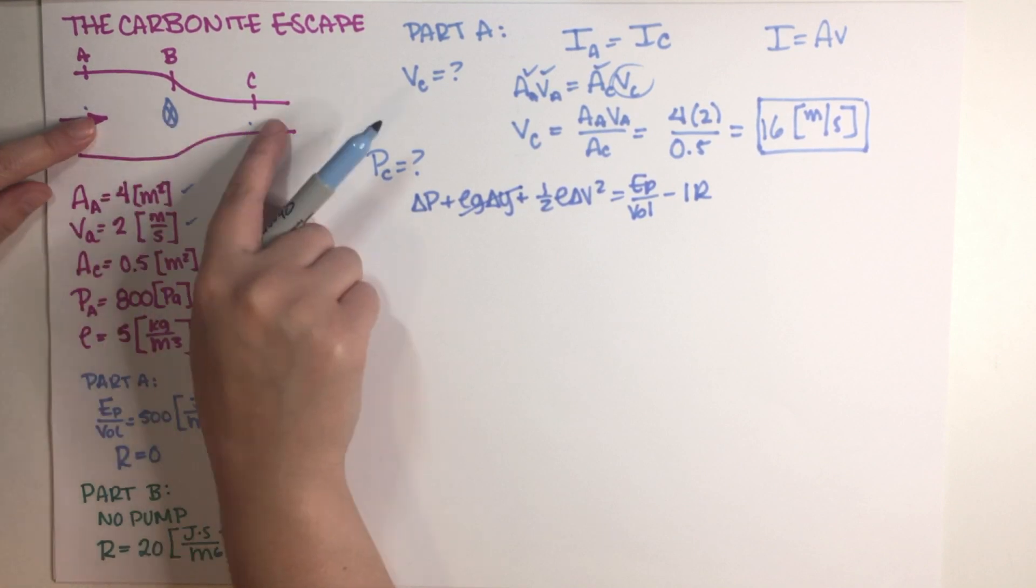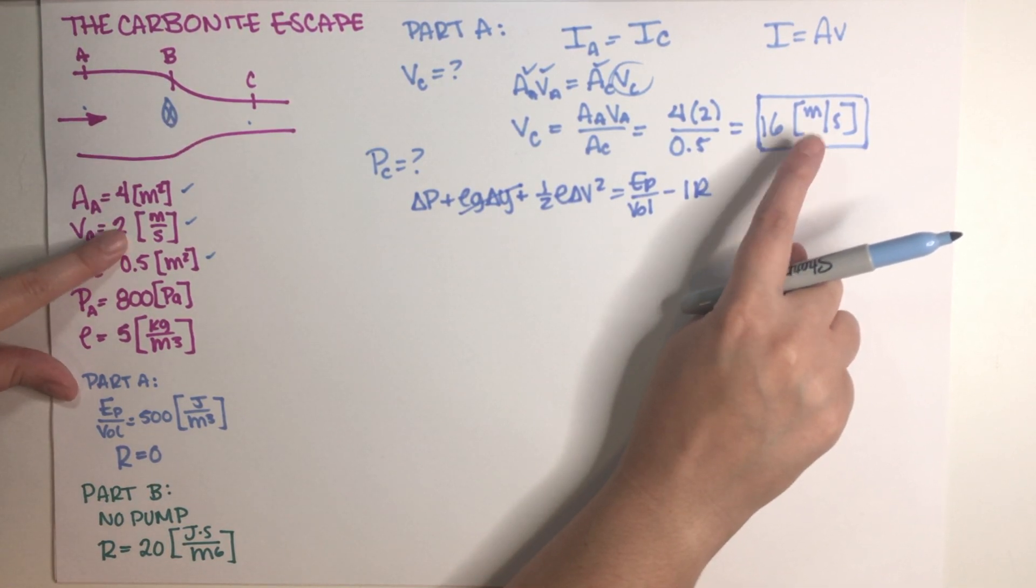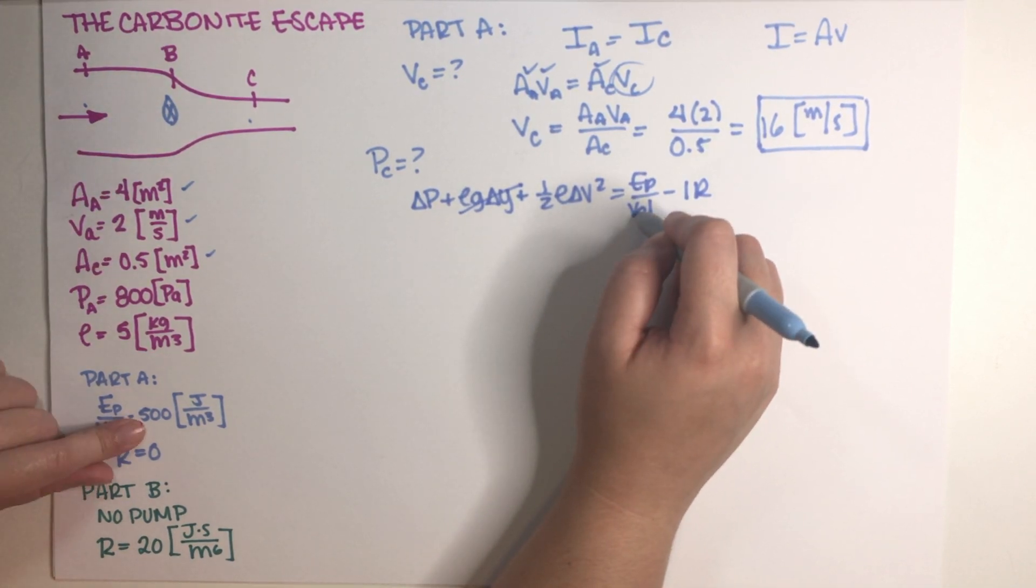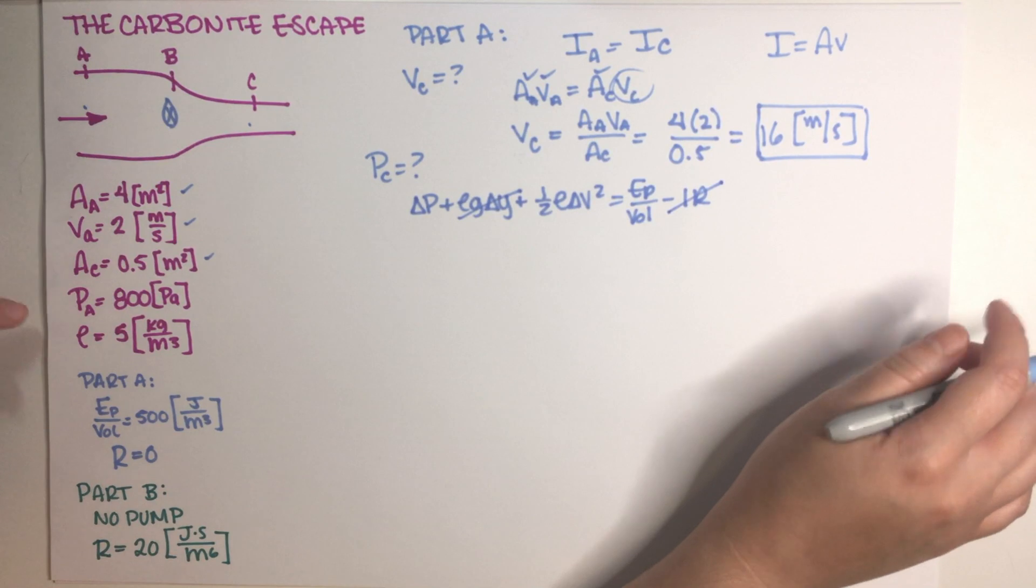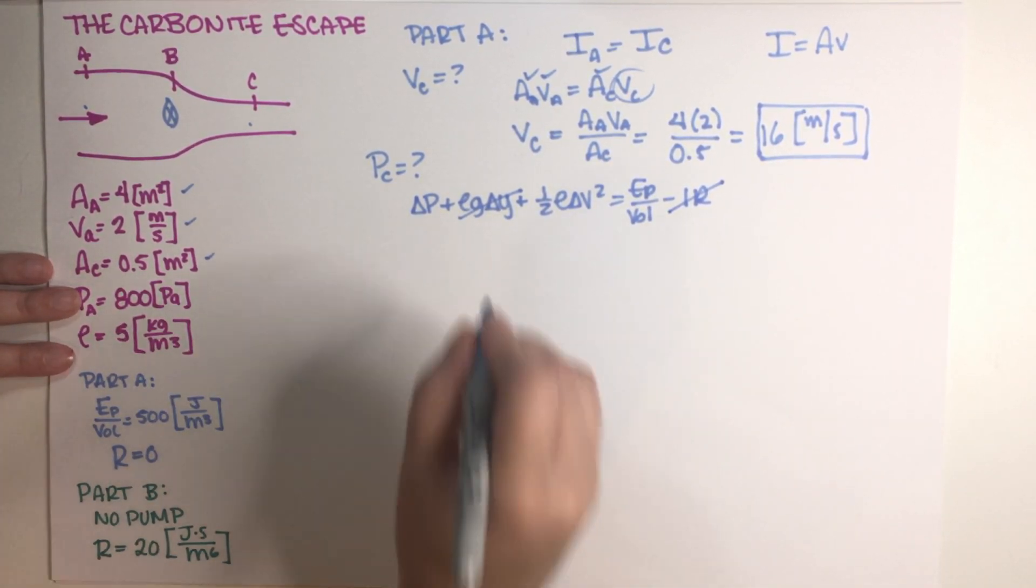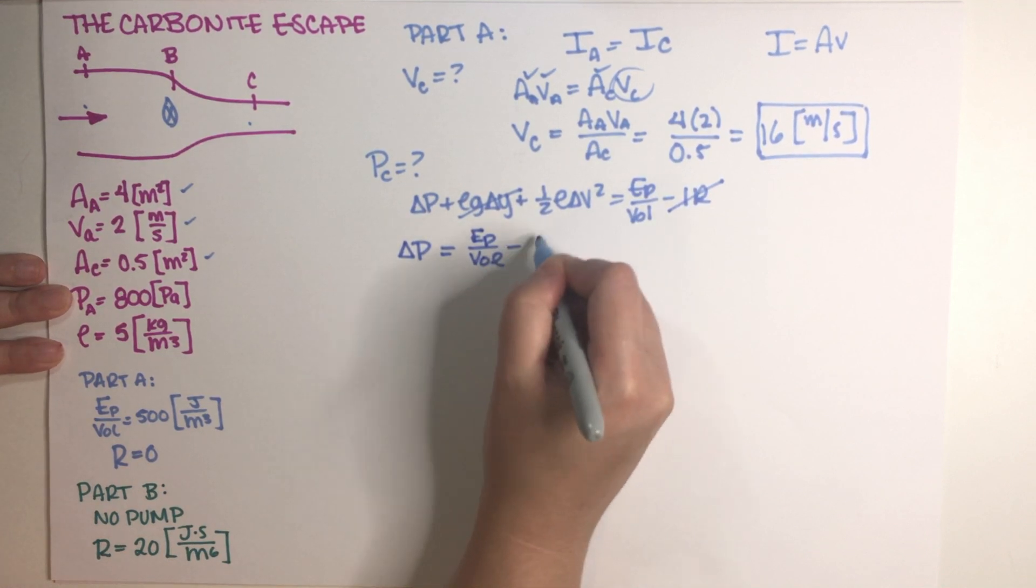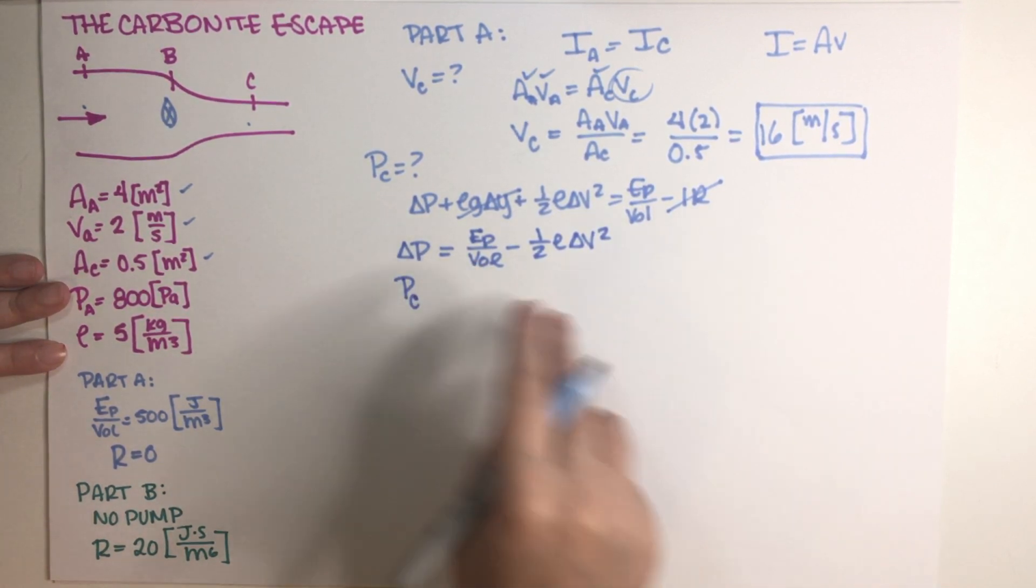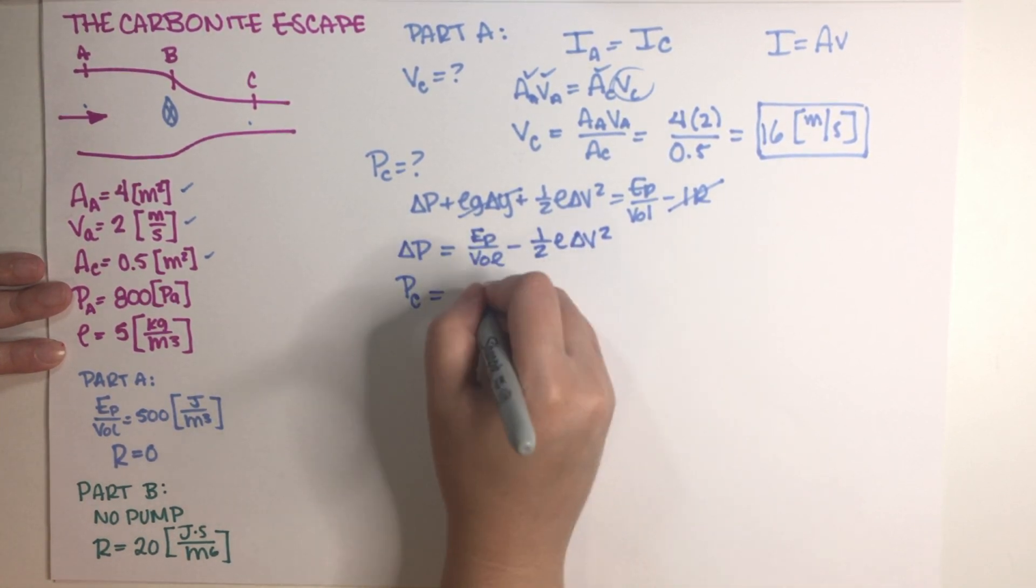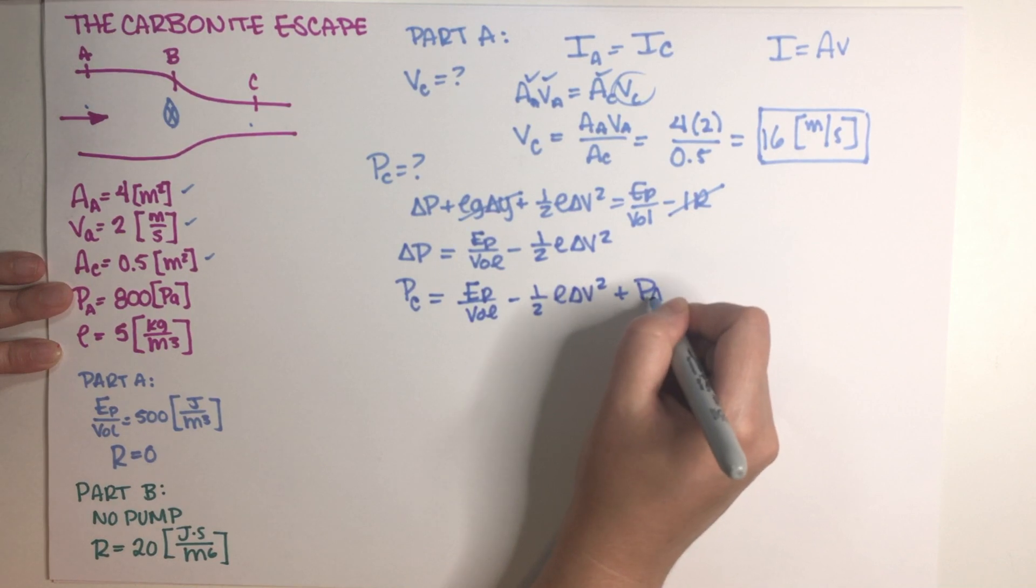So this is the entire Bernoulli equation, and now we have to figure out what terms are going to survive over here. This term is going to go away because we don't really have a change in height. This term is going to stay because we do have a change in area, which means a change in velocity, goes from 2 to 16. We do have a pump over here and we know that it adds 500 joules per meters cubed, and this problem says that there is no resistance, at least for Part A. So let's just go ahead and solve for that. This is delta P equals E pump divided by volume minus one-half rho delta V squared.